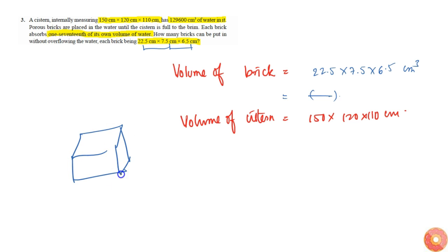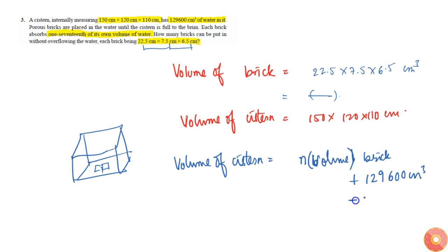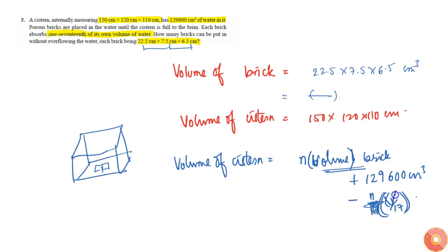The system is a cuboid. Let's say we are placing n bricks. The total volume of the system equals n times the volume of bricks, plus 1,29,600 cm³ of water, minus n times the volume of each brick divided by 17 — because each brick absorbs that much water.